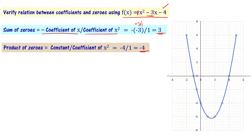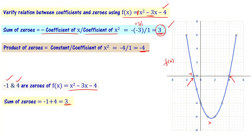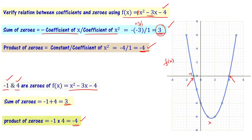Recalling from the graph, the zeros are minus 1 and 4. Sum of zeros: minus 1 plus 4 equals 3 — exactly matches. Product of zeros: minus 1 times 4 equals minus 4 — exactly matches the formula. So the relations we derived for sum of zeros and product of zeros are verified to be correct.